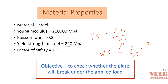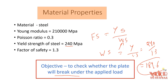So the working stress will be close to 184 megapascal. If the maximum stress we calculate is more than this value, the plate will break. If it is lesser than this value, the plate will not break under the applied load. That is the advantage of having these values of yield strength and factor of safety.